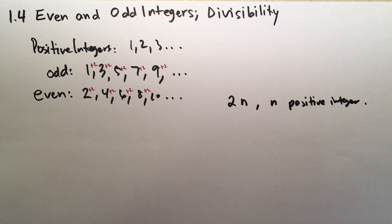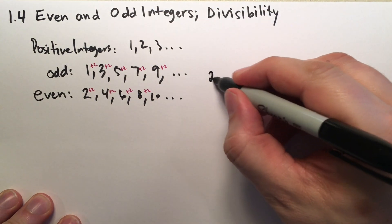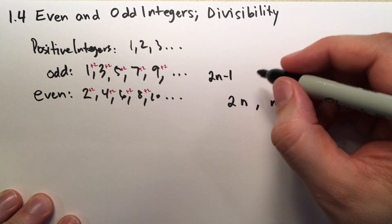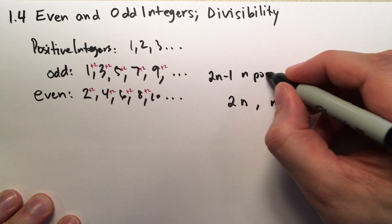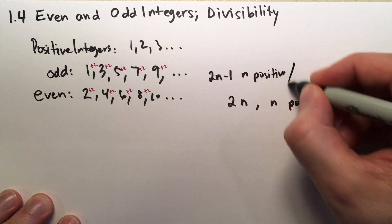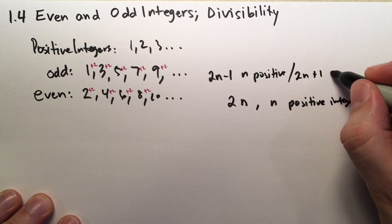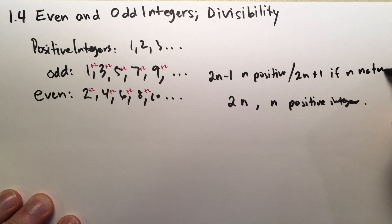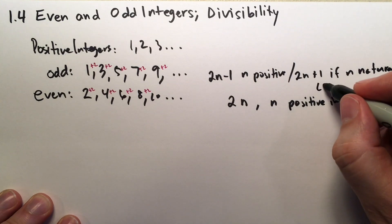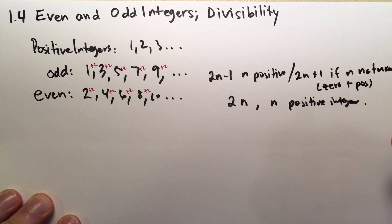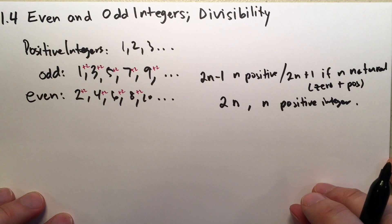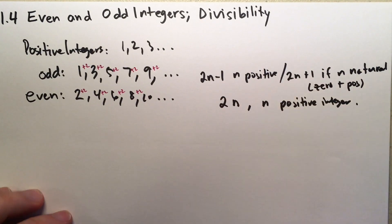And the odd ones, we can write this in one of two ways. We can either say it's 2n minus 1 if n is positive, or we can go 2n plus 1 if n is natural. Remember, natural includes 0, 0 plus the positive integers. We're going to stick with 2n plus 1 for most of this discussion, but you might see me switch to 2n minus 1. It doesn't matter. Either way works.